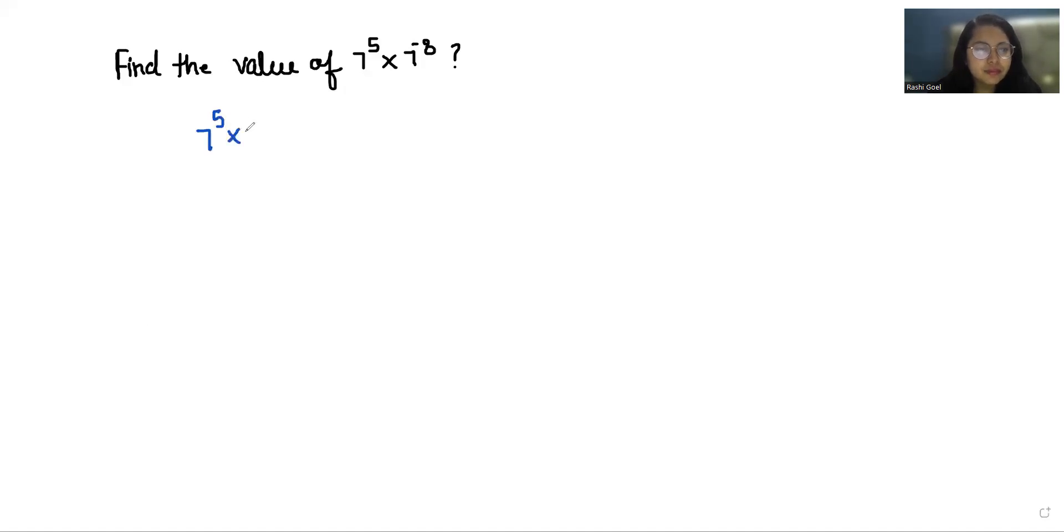According to exponent rule, a power m times a power n, we can write it as a power m plus n. So 7 power 5 plus minus 8, so 7 power 5 minus 8, that is 7 power minus 3.